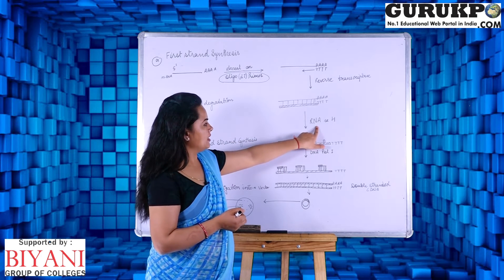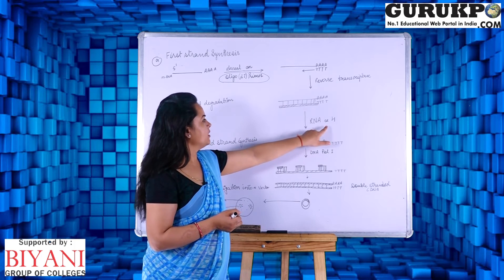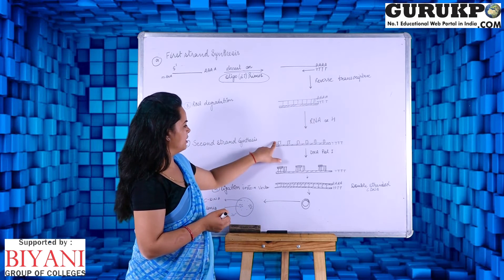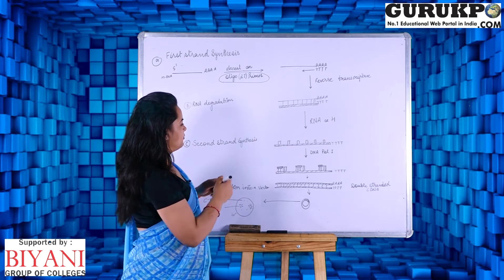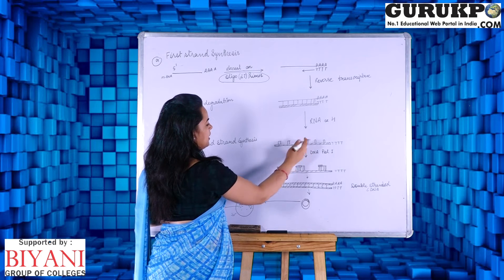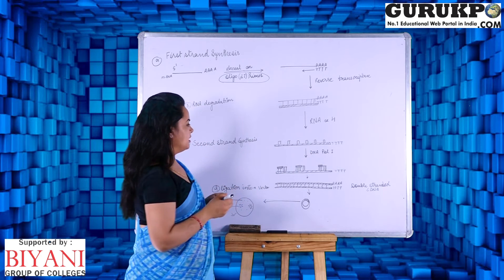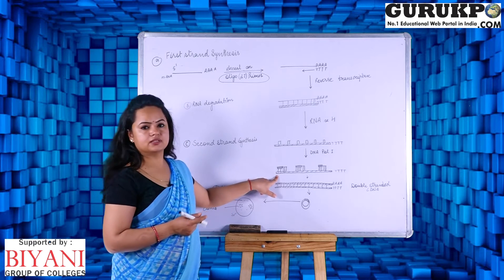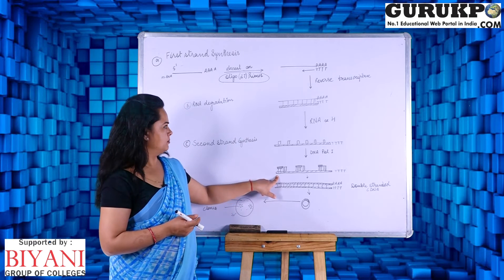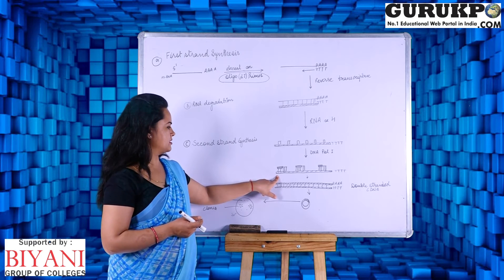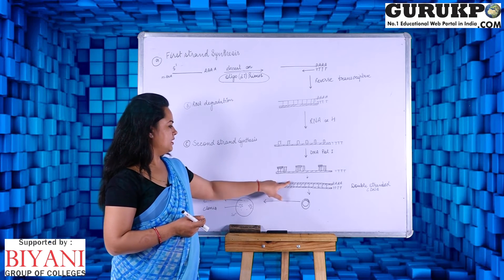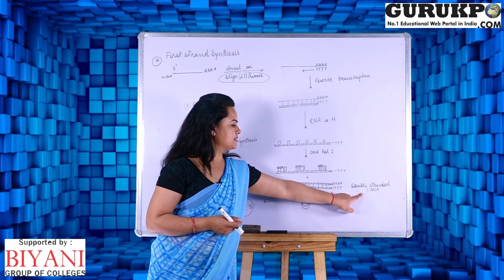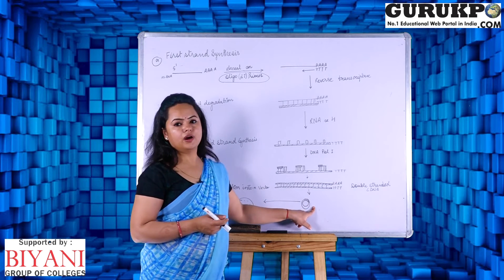Now by using RNase H enzyme, we will degrade the previously present messenger RNA fragment. Here we can see easily that the fragment has been degraded. And by using the DNA polymerase enzyme, we can synthesize a complementary strand to this existing strand which has been synthesized by using the reverse transcriptase. Now it will be easily converted into a double stranded cDNA molecule.